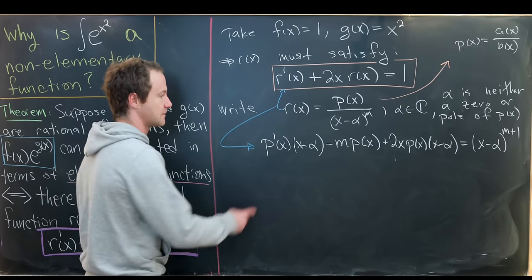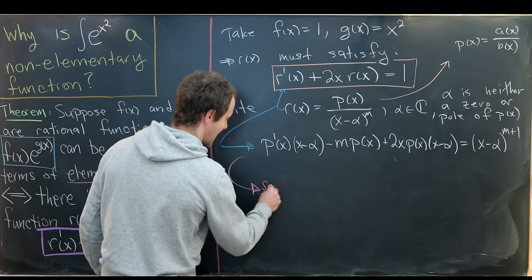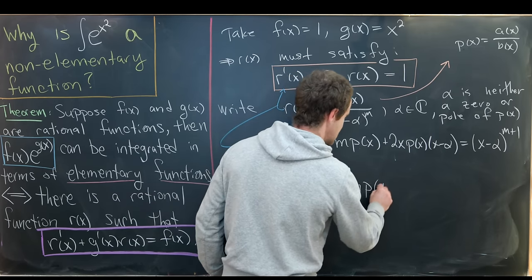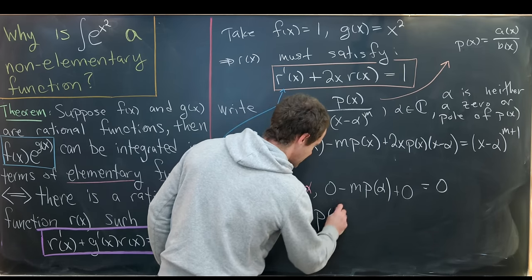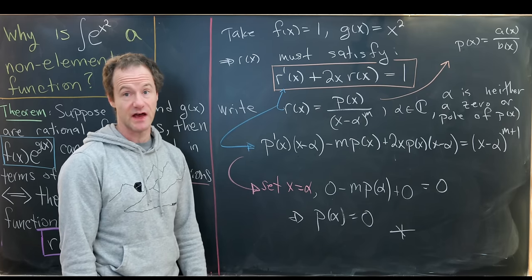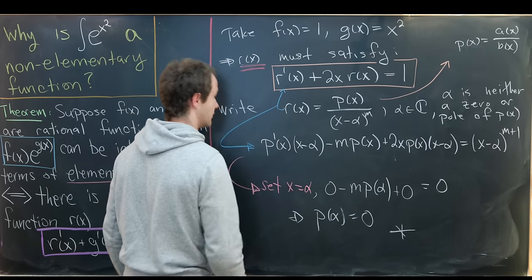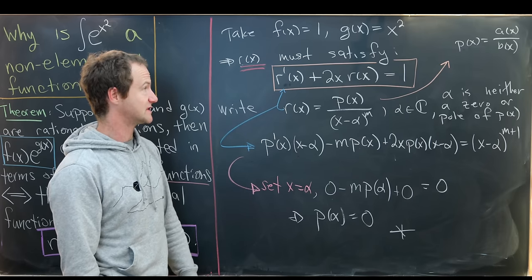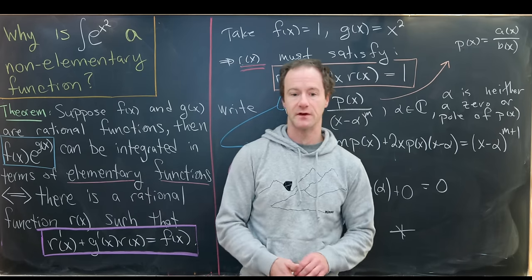Notice every term in the equation contains a factor of (x−α) except for the term −m·p(x). Setting x equal to alpha, all those terms vanish and we're left with −m·p(α) equals 0, which means p(α) equals 0. But that's a contradiction, since we constructed alpha to not be a zero of p(x). Therefore no rational function satisfies this differential equation, and by our powerful theorem, the antiderivative of e to the x squared is not elementary.